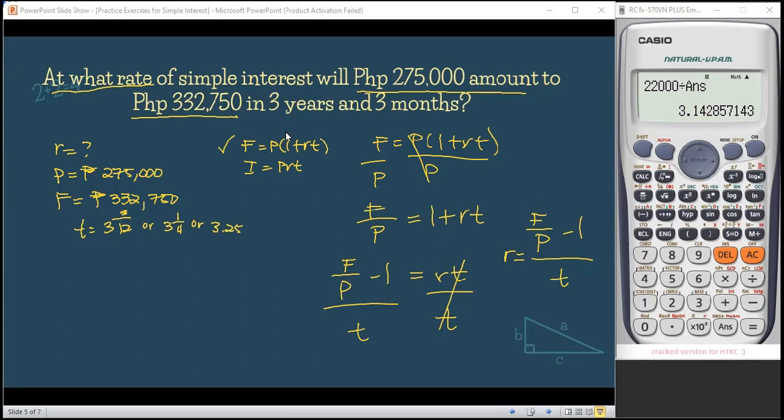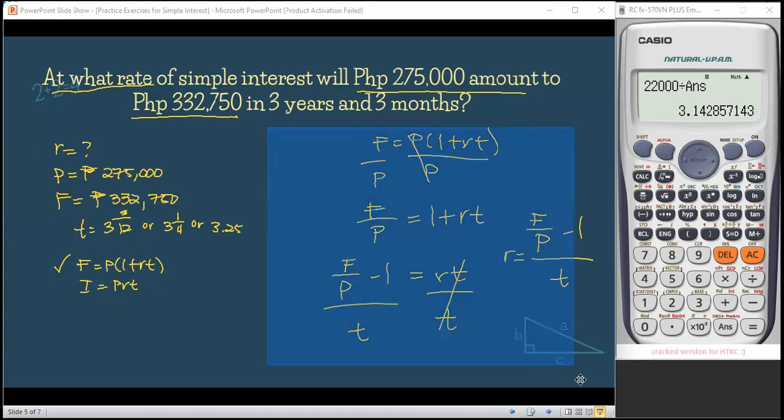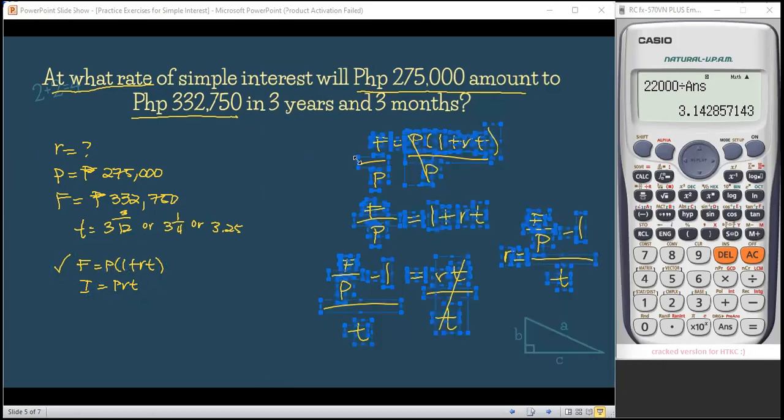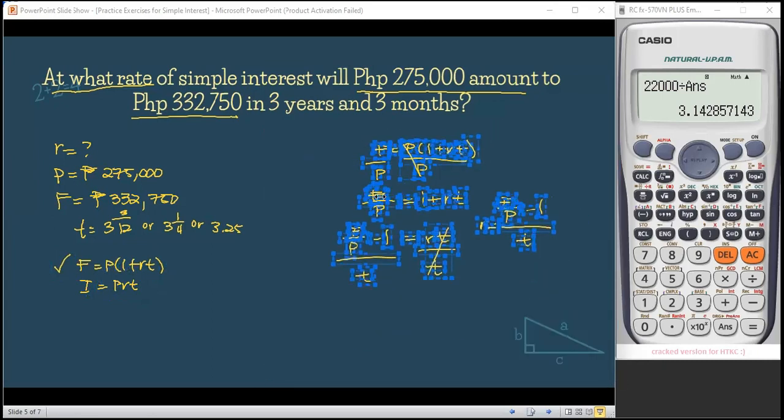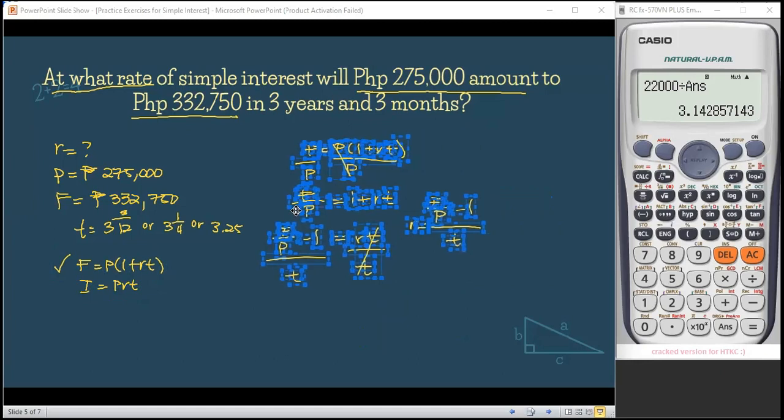If you find it difficult to derive, you can always memorize the formula. However, as I said, in the example, what I'll give or what I'll include in the exam papers is the general formula. The derivation, you're responsible for deriving. I'll only write the general one. But if you really can't derive, that's okay. You can memorize.